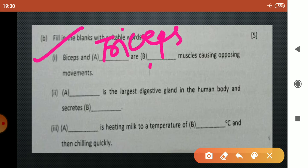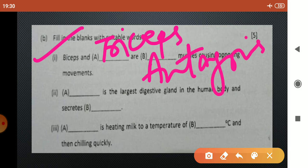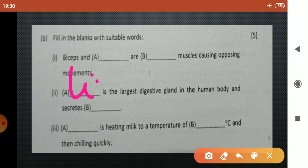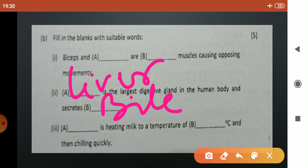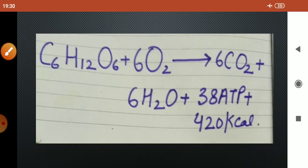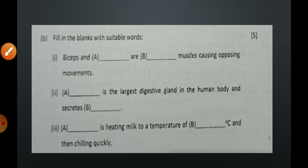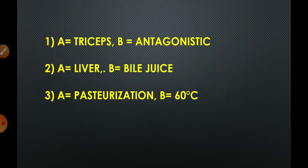The second blank is dash is the largest digestive gland in the human body and secretes dash. Children, liver is the largest digestive gland and it secretes bile juice. Now the third one is pasteurization is heating milk to a temperature of 60 degrees Celsius and then chilling quickly.